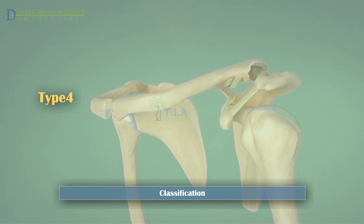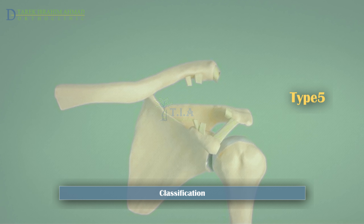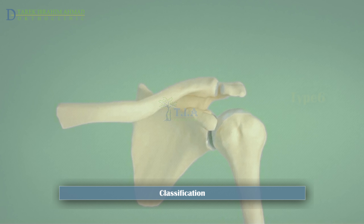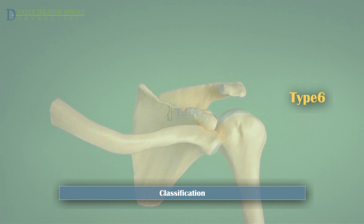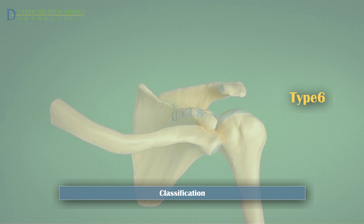Type 4 AC injuries occur when the ligaments are completely torn and the clavicle is pushed backwards into the trapezius muscle. Type 5 AC injuries occur when the ligaments that stabilize the acromioclavicular joint are completely torn, and the deltoid and trapezius muscles are torn away from the clavicle. Type 6 AC injuries occur when the ligaments and muscles that stabilize the acromioclavicular joint are torn and the clavicle is dislocated inferiorly and lodged underneath the coracoid.